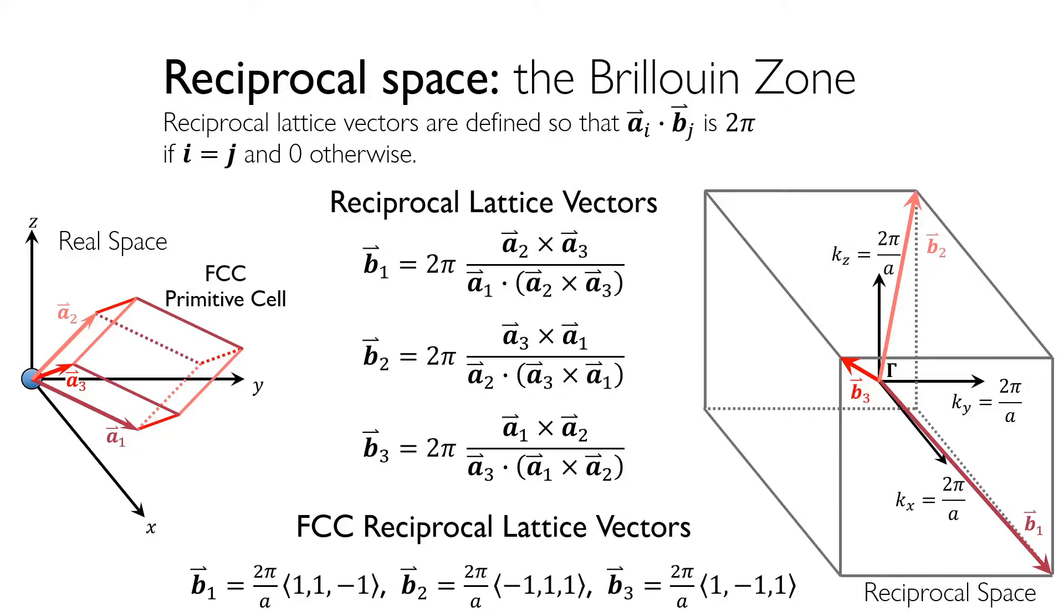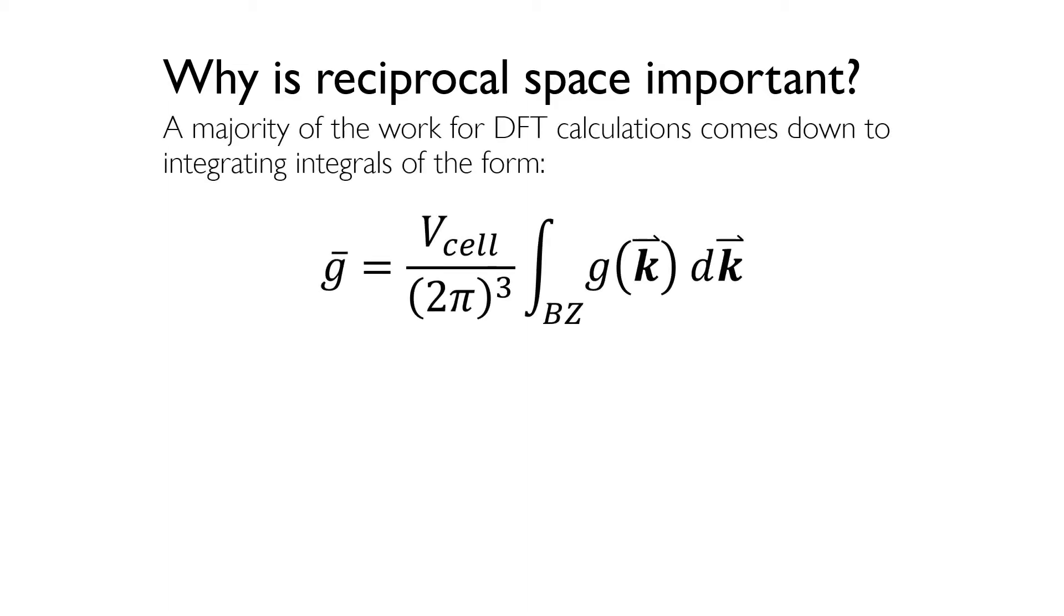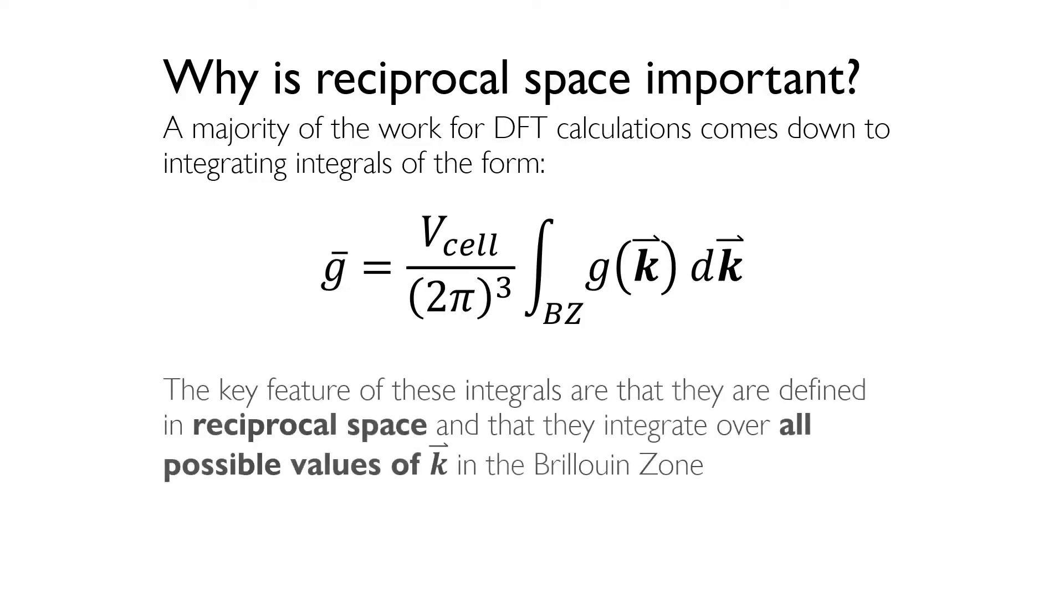The primitive cell in reciprocal space is called the Brillouin zone. You can see here plotted the reciprocal lattice vectors that define it. Important points within the Brillouin zone are given individual names. The most important of these points is the point where the vector k is equal to 0 at the origin of the Brillouin zone. This particular point is called the gamma point. But why is the Brillouin zone so important when it comes to plane wave DFT calculations? A simple answer is that the majority of the work for DFT calculations boils down to evaluating integrals of the following form. The key features of this integral are that it is defined in reciprocal space and it integrates over all possible values of k in the Brillouin zone. As evaluation of these integrals takes up so much of the computational effort of DFT calculations, finding a process to efficiently evaluate these integrals has been a carefully studied problem.